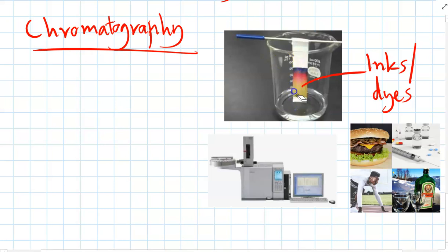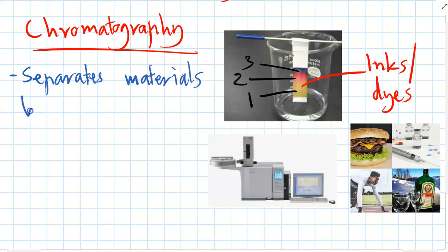So by the end of the process you can see that what started as a single coloured ink, we can actually see is made of yellow, red and purple. So there's actually three different colours of ink in this one ink. So chromatography separates materials based on how fast they move.